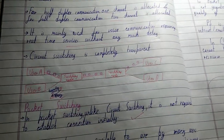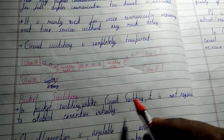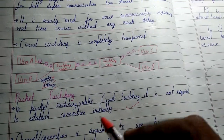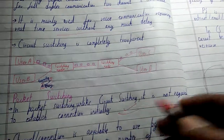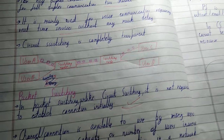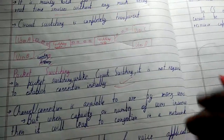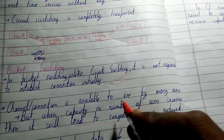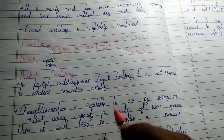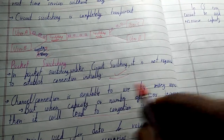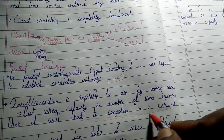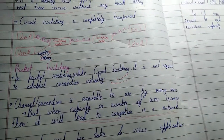Now let's come to packet switching. Unlike circuit switching, it is not required to establish a connection initially — you don't need an initial dedicated connection. Secondly, the channel is available for use by many users, but when the capacity or number of users increases, it will lead to congestion in the network.